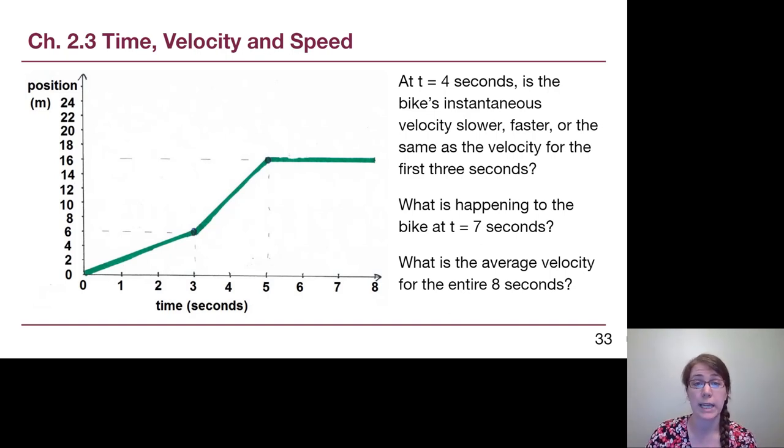The next question: what is happening to the bike at t equals seven seconds? If we look at that part of the chart, the line is flat. The slope of a flat line like that is zero meters per second, which means that the bike has stopped moving at seven seconds. In fact, it stopped moving at five seconds, and then the timer has just continued to go. And just to make sure we understand the ideas from the previous video, we can think about the average velocity equation. For the entire eight seconds, we want the total change in position over the total change in time. We have changed our position to be a full 16 meters different from where we started, and it took us eight seconds to do so. So our average velocity is positive two meters per second.